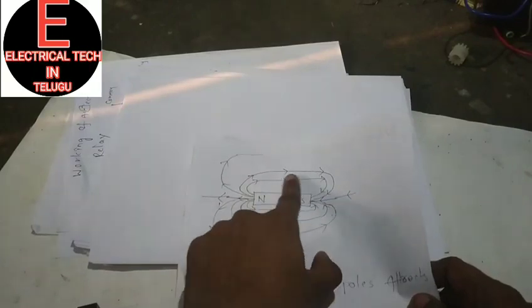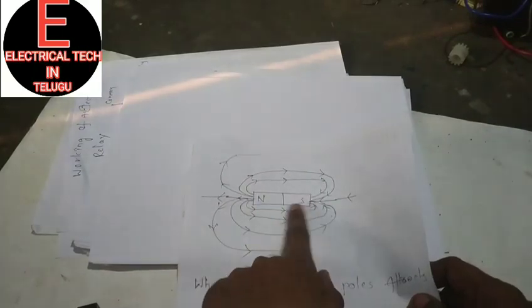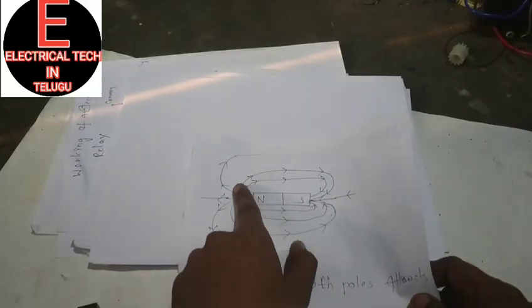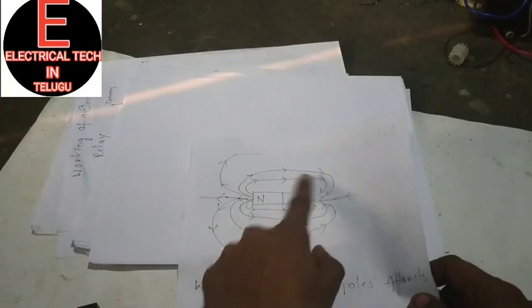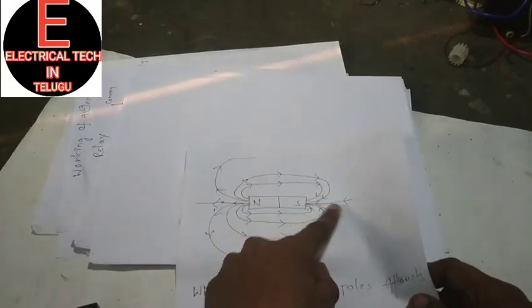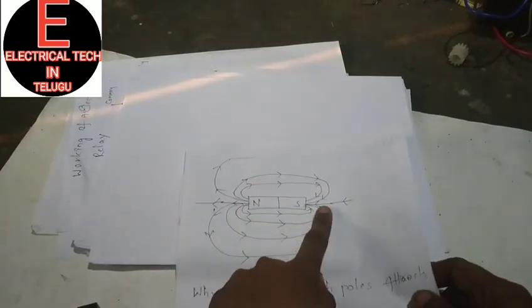North pole to south pole — that is the direction the magnetic field lines travel. This is the force direction: north pole to south pole.